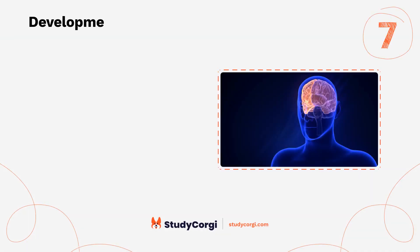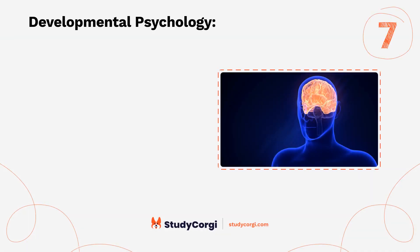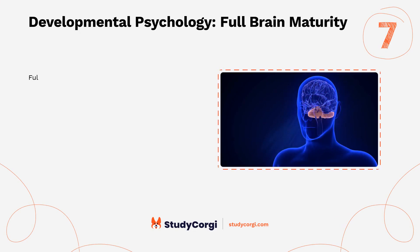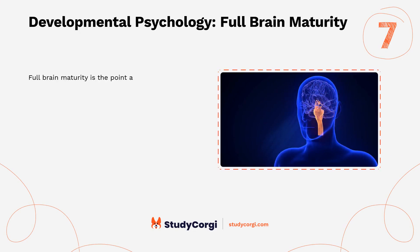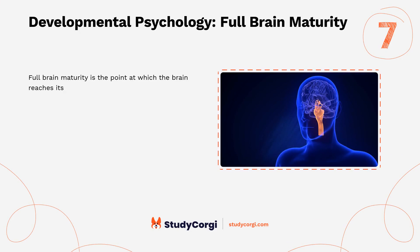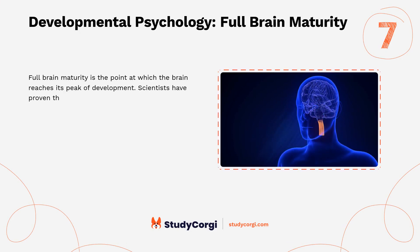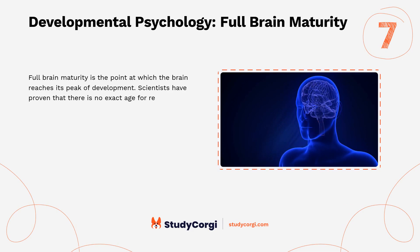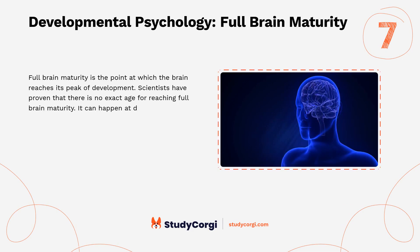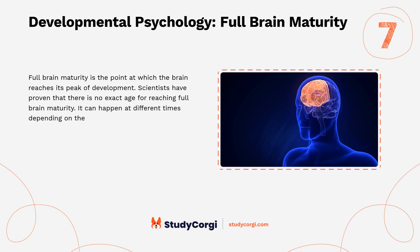Developmental psychology: full brain maturity. Full brain maturity is the point at which the brain reaches its peak of development. Scientists have proven that there is no exact age for reaching full brain maturity — it can happen at different times depending on the influence of various factors.